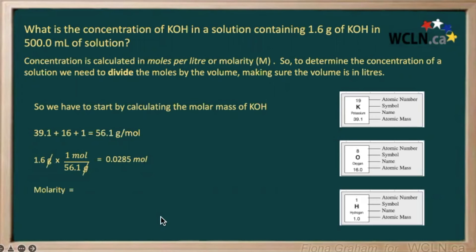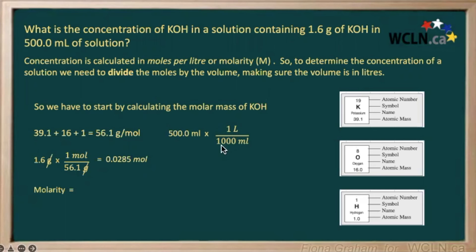Now we want to calculate the molarity. Remember, molarity needs to be divided by our volume in liters, but they've given us volume in milliliters, so let's convert. 500 milliliters times the conversion factor — 1 liter equals 1,000 milliliters — units cancel out, giving us 0.5 liters.